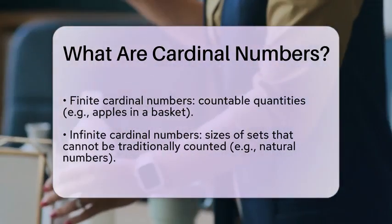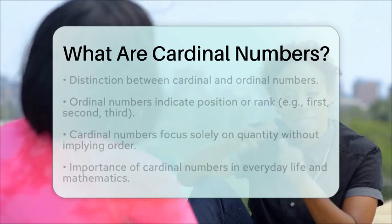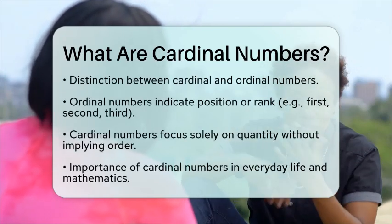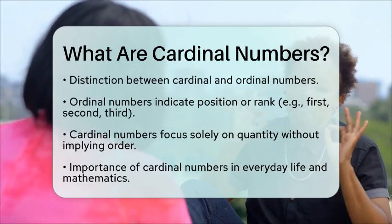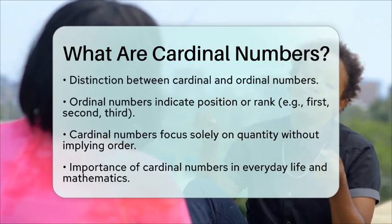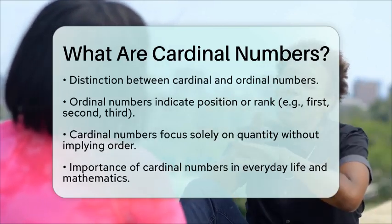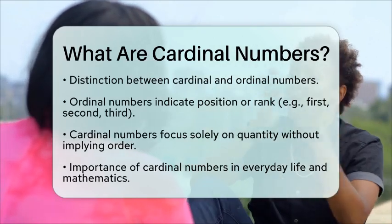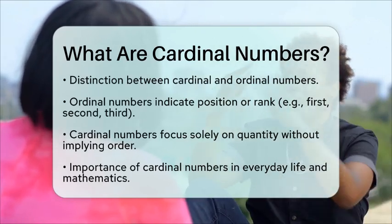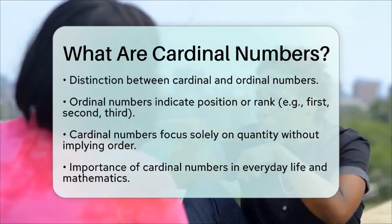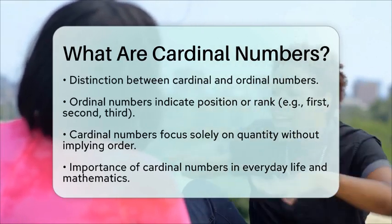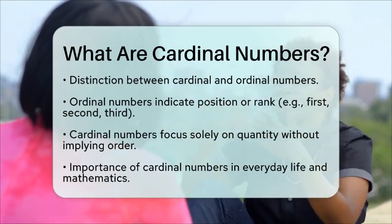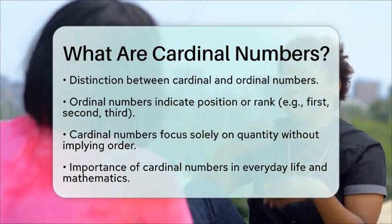Cardinal numbers differ from ordinal numbers, which indicate position or rank in a sequence, such as first, second, or third. While ordinal numbers tell you the order of items, cardinal numbers focus solely on the quantity. In summary, cardinal numbers are fundamental to counting and quantifying in both everyday life and mathematical contexts, helping us communicate how many of something exists without implying any specific order.